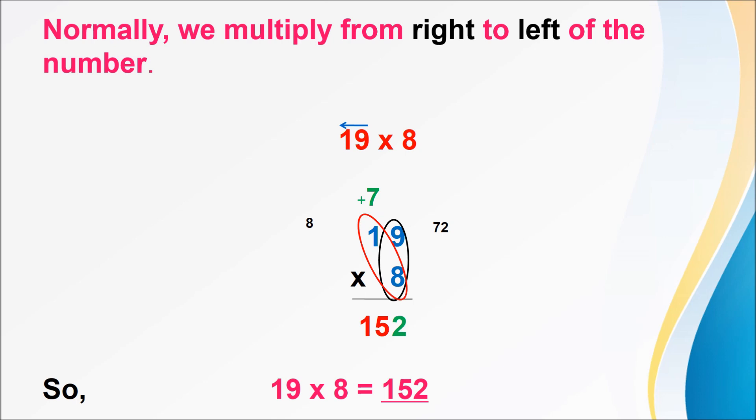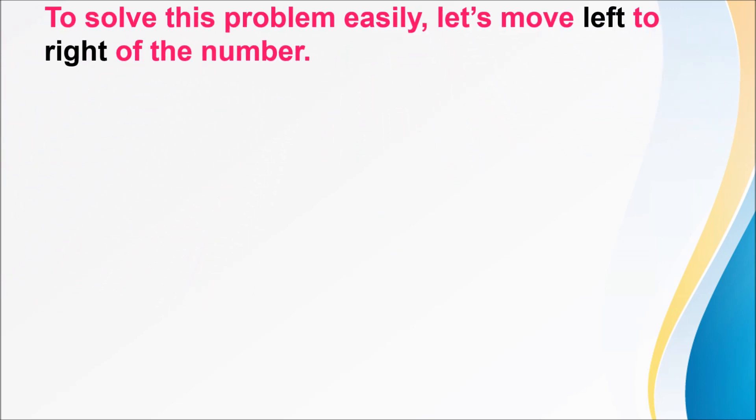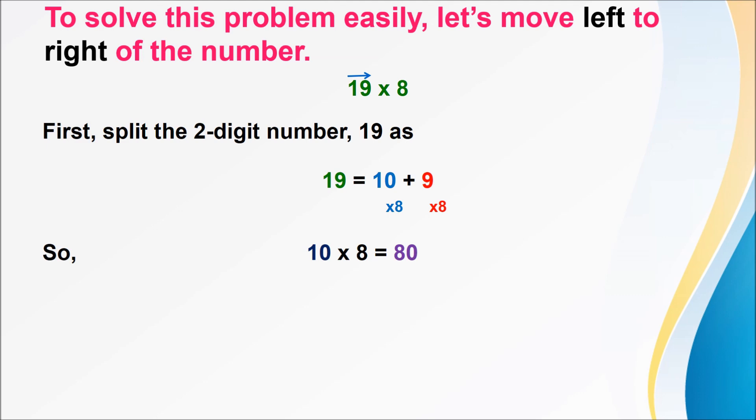While this is easy to do with a pen and paper, it's quite hard to do that mentally, isn't it? Solving this problem becomes easy when you move from left to right of 19. To calculate this way, first, split the 2-digit number 19 as 10 plus 9 and then multiply each number with 8. So, 10 into 8 is equal to 80 and 9 into 8 is equal to 72. Finally, add 80 and 72 to get the answer 152. So, 19 into 8 is 152. Isn't that less mind-boggling?